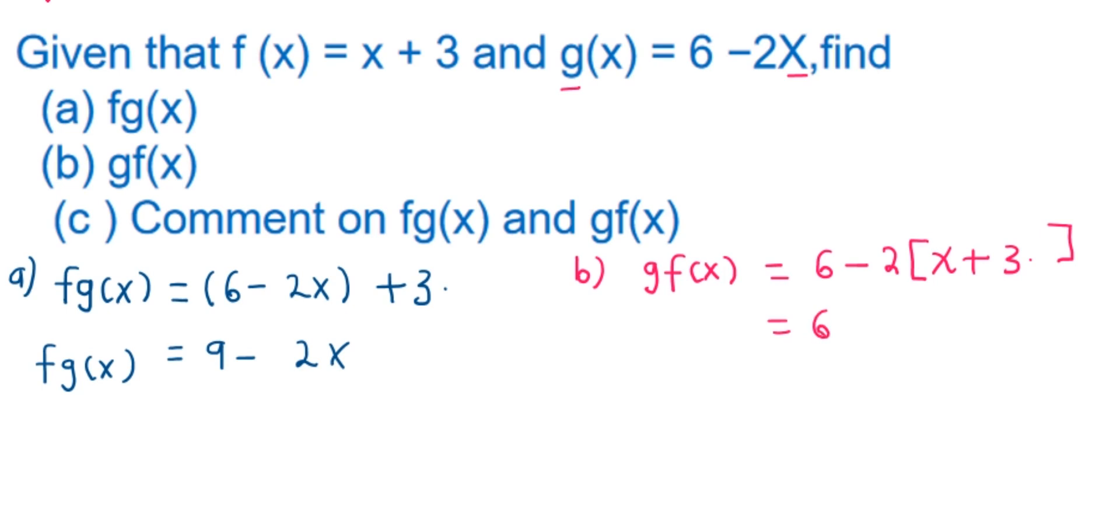After here, we are going to distribute this negative equally through to this bracket. So what is negative 2 times x? Negative 2x. Negative 2 times 3? Negative 6.